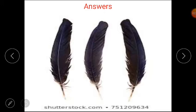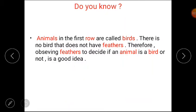Now, students, tell me: what is the name of the animals in the first row? Animals in the first row are called birds. There is no bird that does not have feathers. Therefore, observing feathers to decide if an animal is a bird or not is a good idea. I hope you understand that.